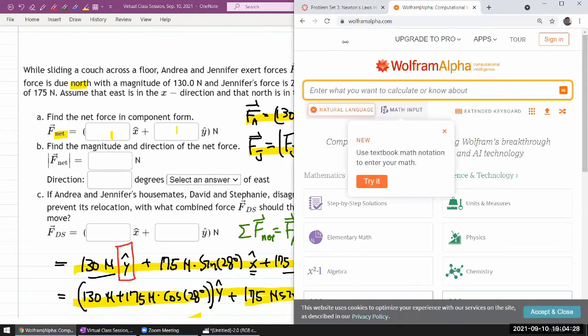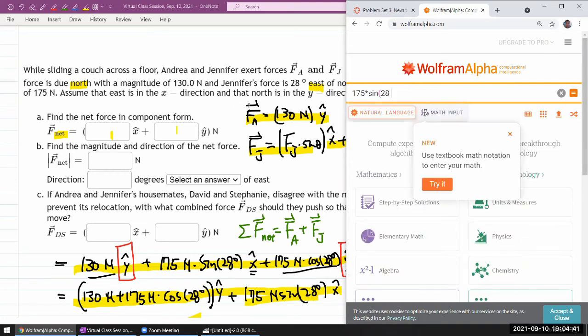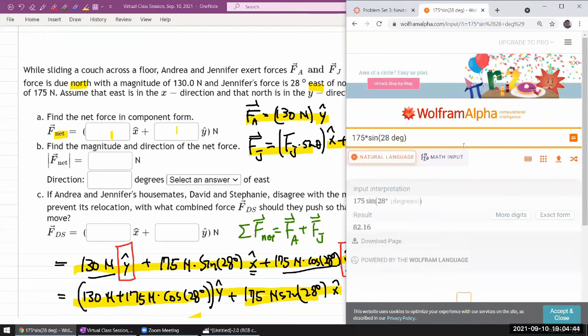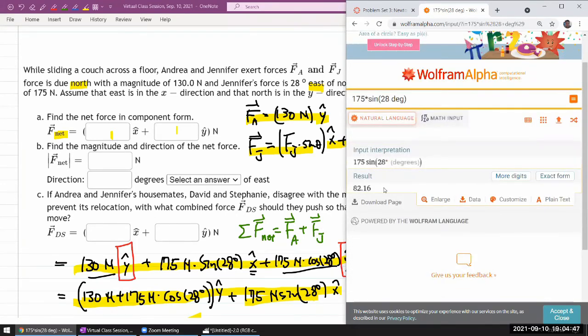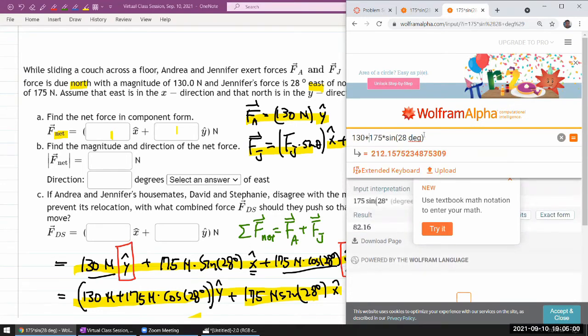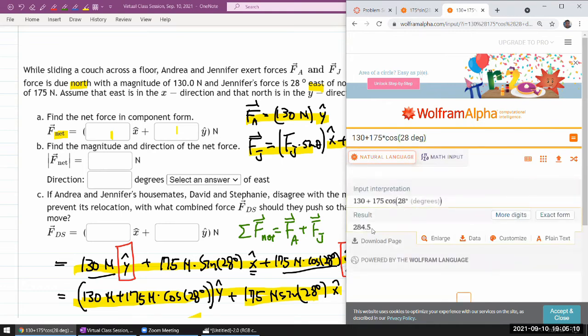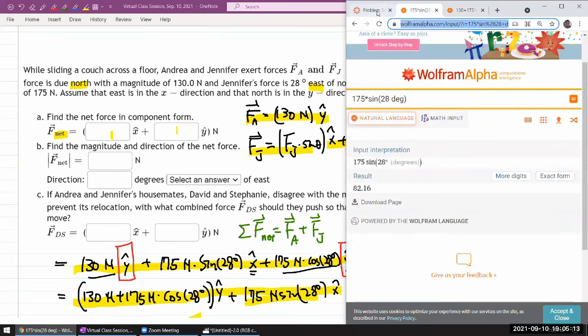It's Wolfram Alpha. It's quicker than doing this on a calculator. So I have 175 newton, and yes I could have put in newton, but let me just omit newton since newton is here. 175 times sine of 28 degrees. They understood me fine. 82.16. Let me just refer to that later and do this calculation. So 130 plus 175 newton times cosine of 20 degrees. So 284.5 newton. So yeah, those two should be the answer.